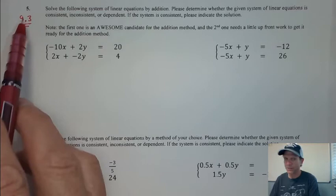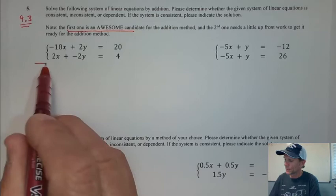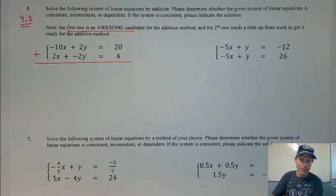Here's your note packet. For number five, here is the start of 9.3 and it says this first one is an awesome candidate for the addition method. I'll show you why it's an awesome candidate.